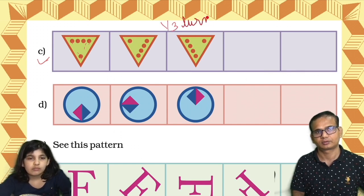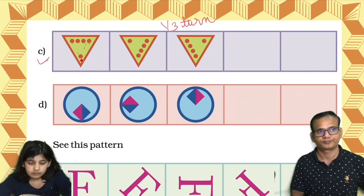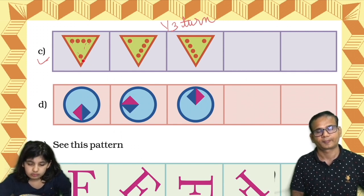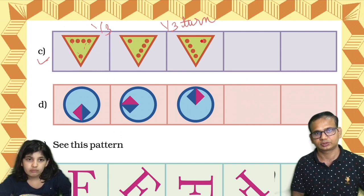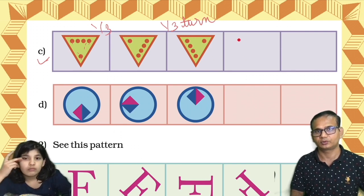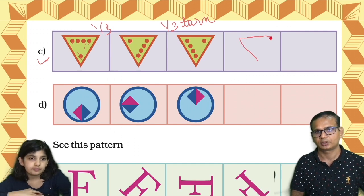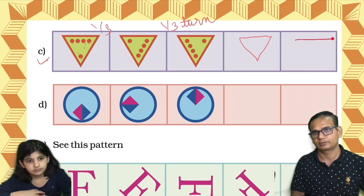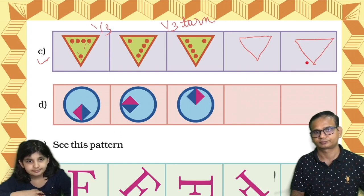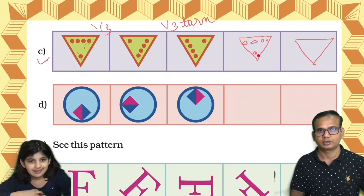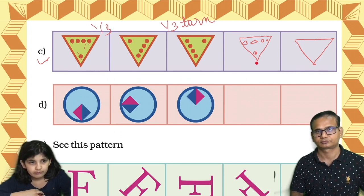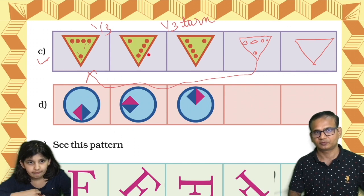One-third turn — right? Here also one-third turn, so this ball is coming here. The next pattern — first I'll draw the triangle, inside balls and outside, and then again it will be like this. One, two, three, four — just like this. This and this is the same, so after that you follow the same pattern.